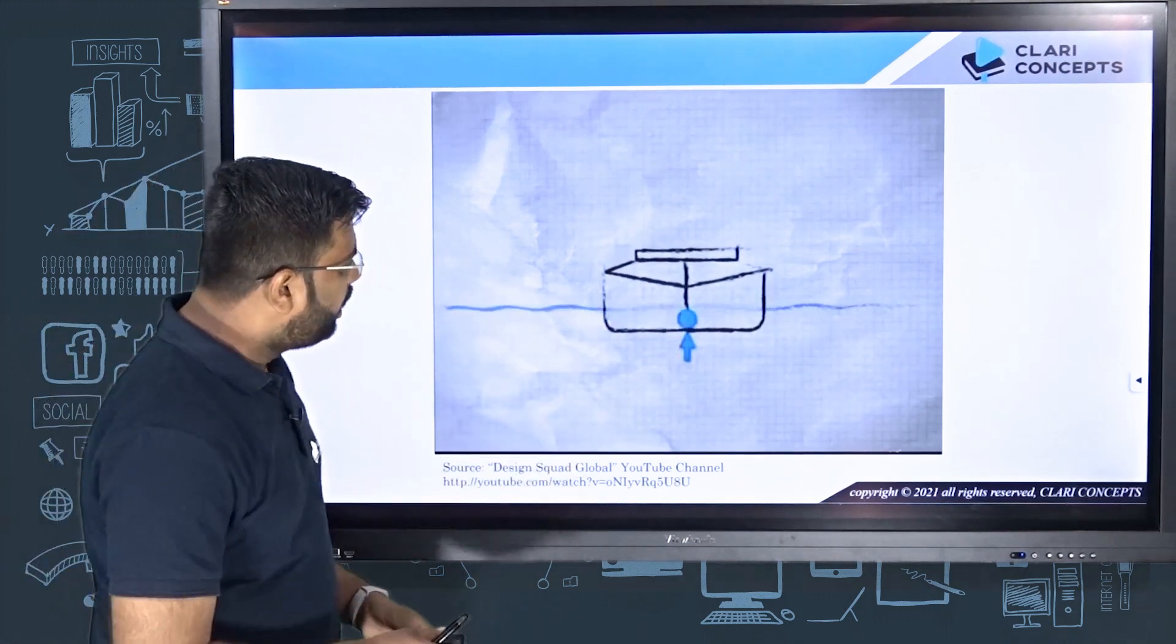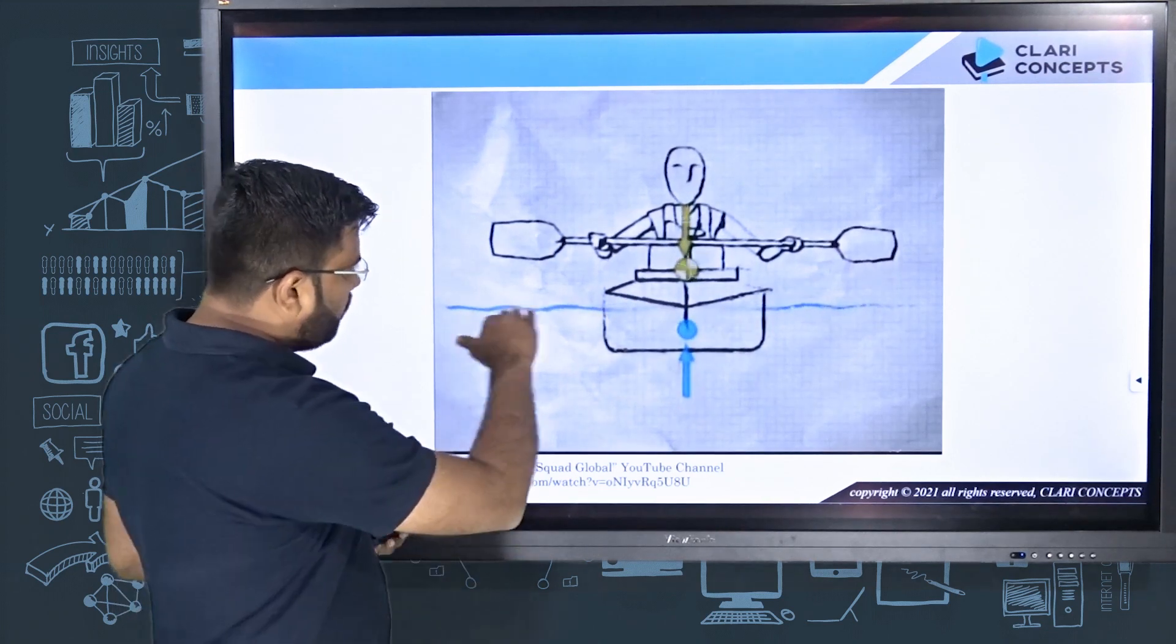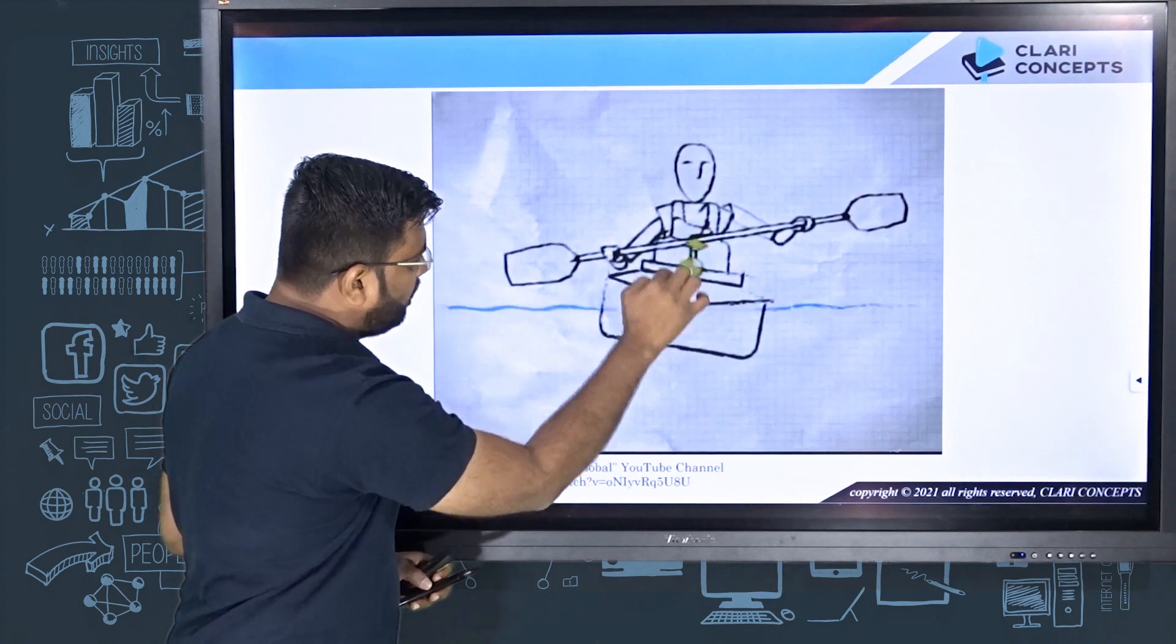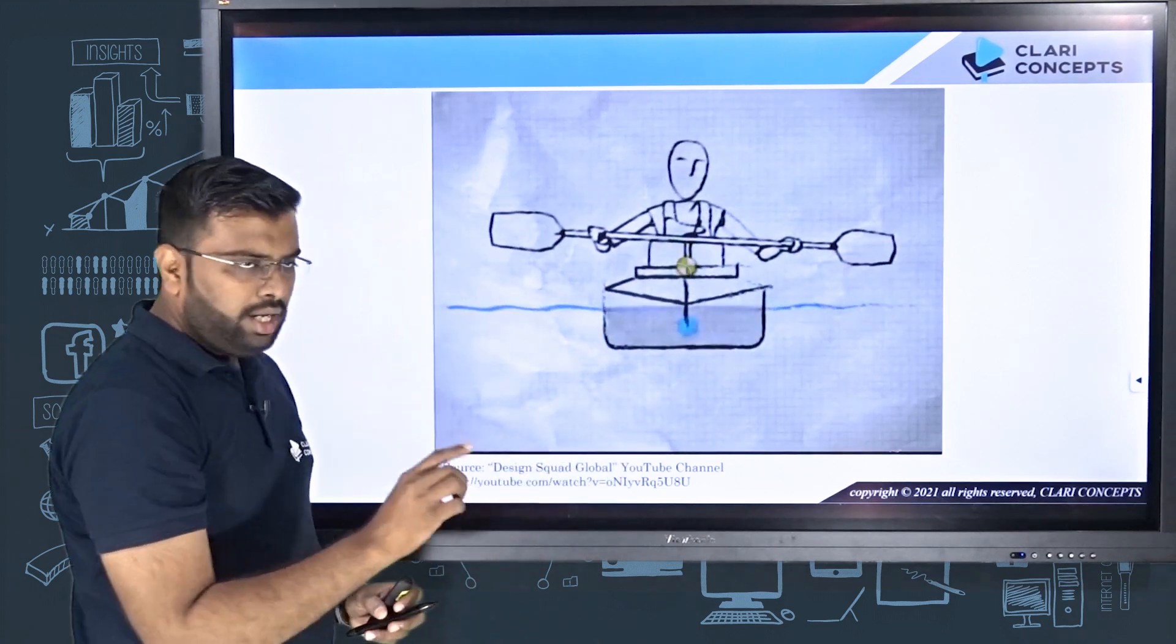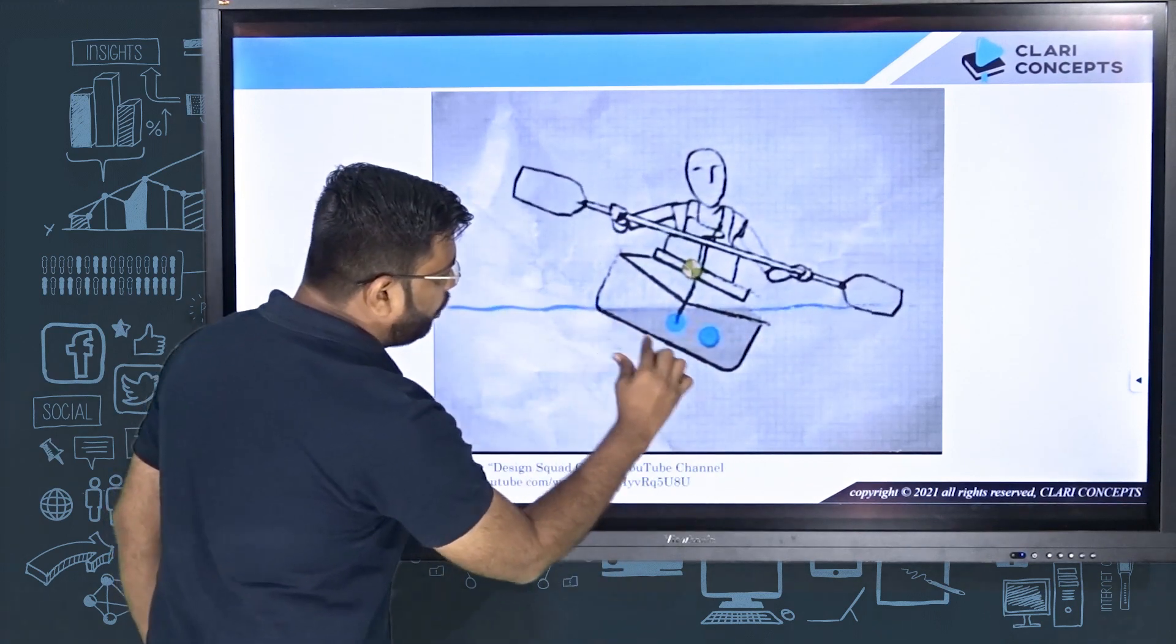When a person sits on it, you can see the water surface. This is the center of gravity of the entire person plus ship, and the blue point is the center of buoyancy. If you look closely, the blue color is the centroid of the portion of the ship which is submerged in the water.